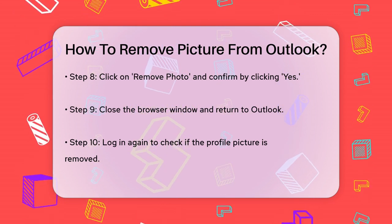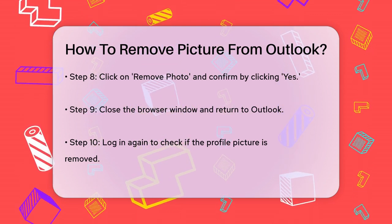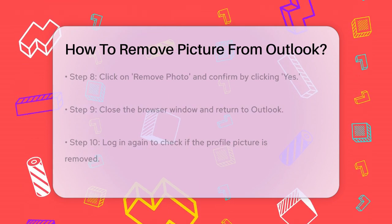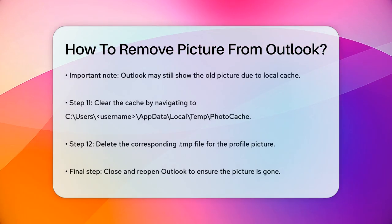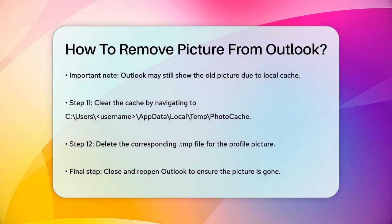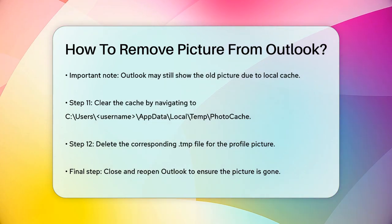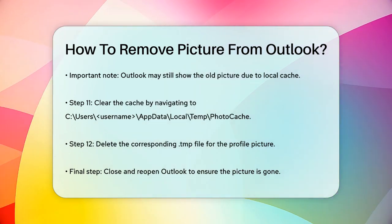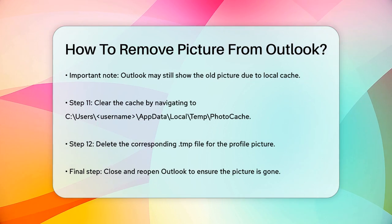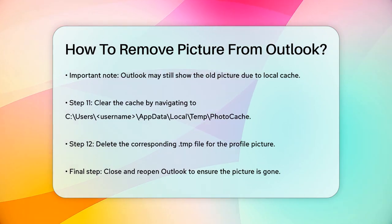To do this, go to the folder C:\Users\username\AppData\Local\Temp\photo cache on your computer. Here you'll find thumbnail profile pictures stored as .tmp files. Delete the file that corresponds to your profile picture, close and reopen Outlook, and the picture should be gone for good.